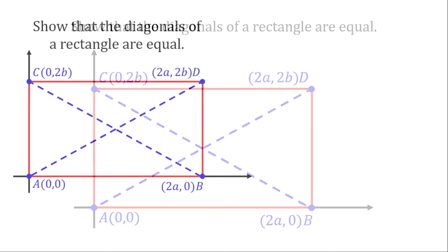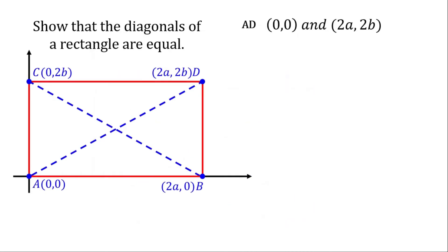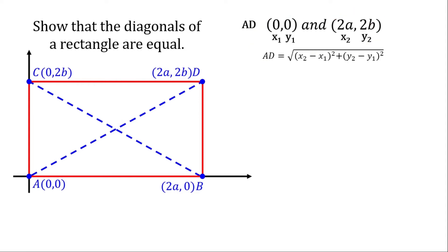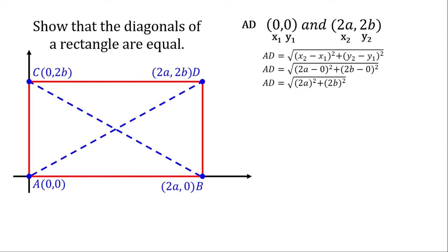These are the diagonals. Let's check if the diagonals of the rectangle are equal. Let's find diagonal AD first using the distance formula. This will be our point 1 and point 2. Substituting the given: 2A minus 0 and 2B minus 0. Simplifying: 2A squared is 4A squared and 2B squared is 4B squared. So that is the distance of AD.